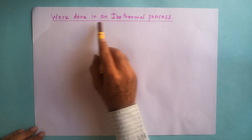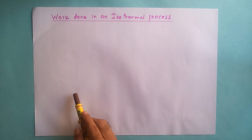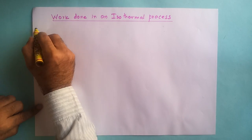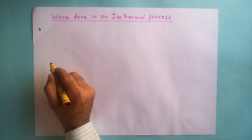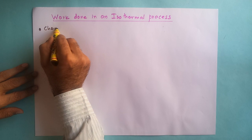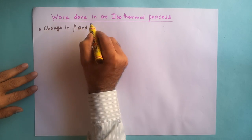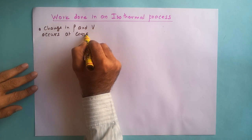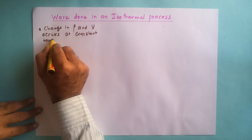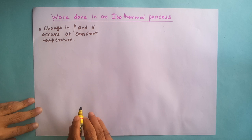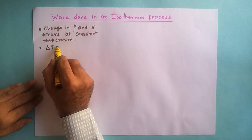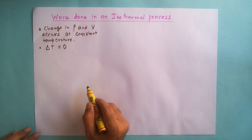We are going to discuss an isothermal process and the work done in an isothermal process. We first need to revisit what an isothermal process is. A process in which the change in pressure and volume occurs at constant temperature is known as an isothermal process. The temperature remains constant throughout, meaning delta T equals zero — there is no change in temperature.